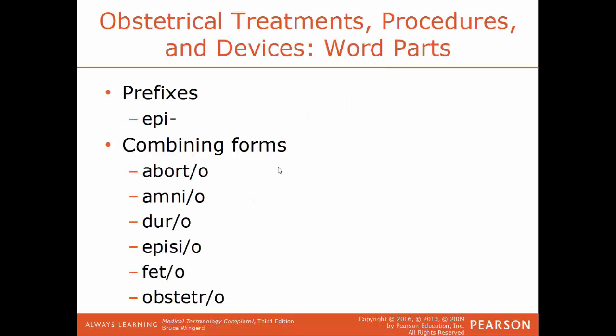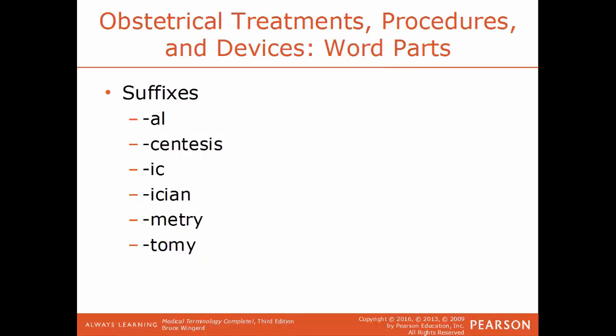Obstetrics treatments, procedures, and devices and word parts: prefix Epi means above. Combining forms include Aborto for abortion, Amnio for amniotic sac, Duro for dura mater, Episio for vulva, Feto for fetus, and Obstetro for pregnancy or birth. Suffixes include Al for pertaining to, Centesis for a puncture to withdraw fluid, Ic for pertaining to, Ision for specialist, Metri for measuring, and Tomi for cutting.